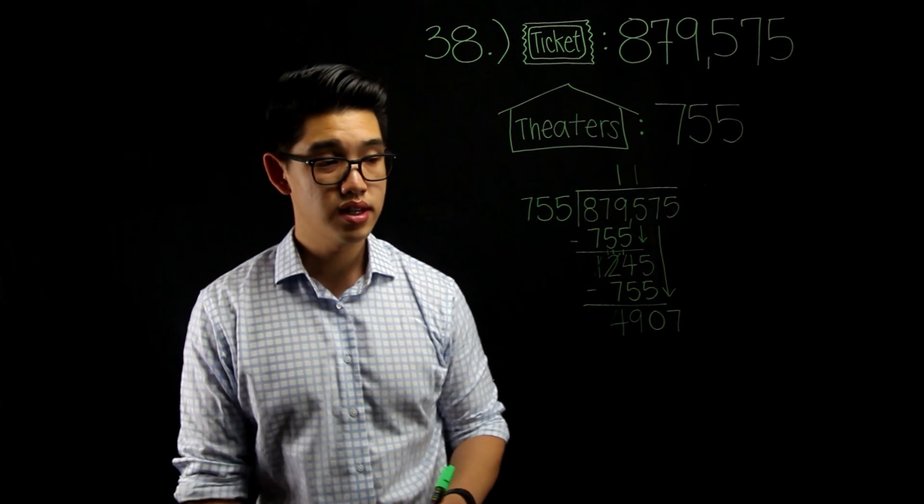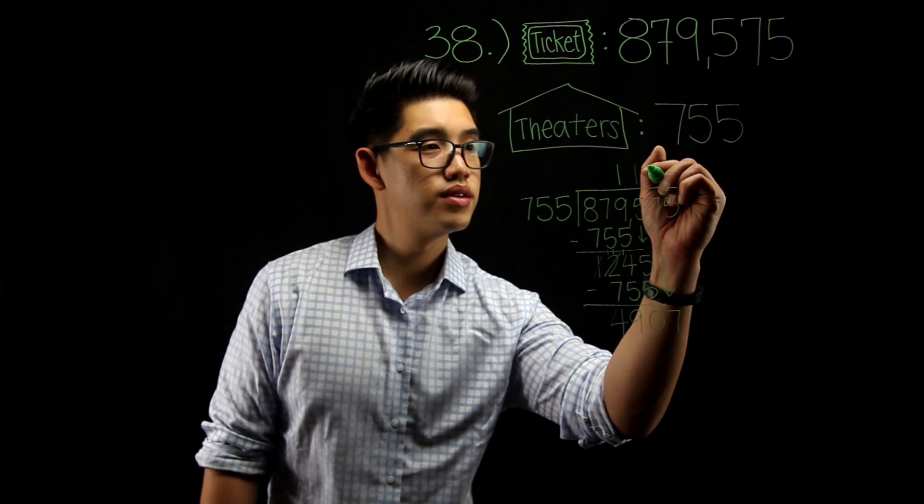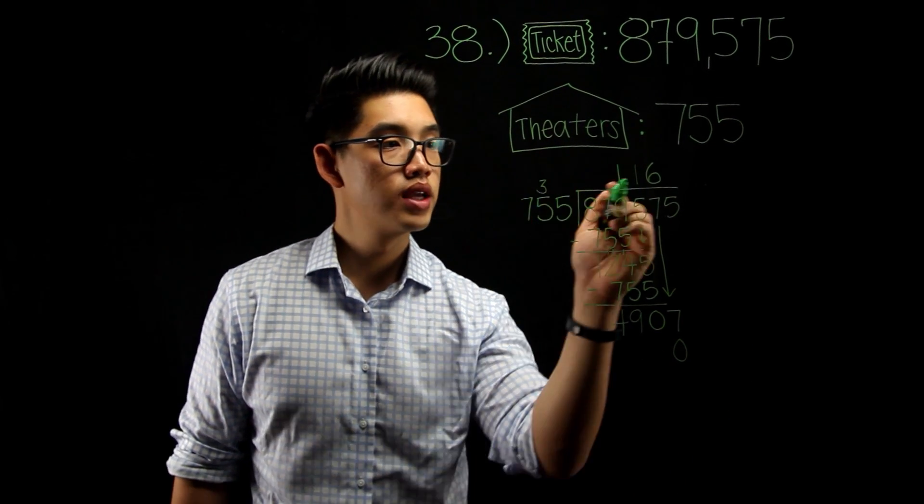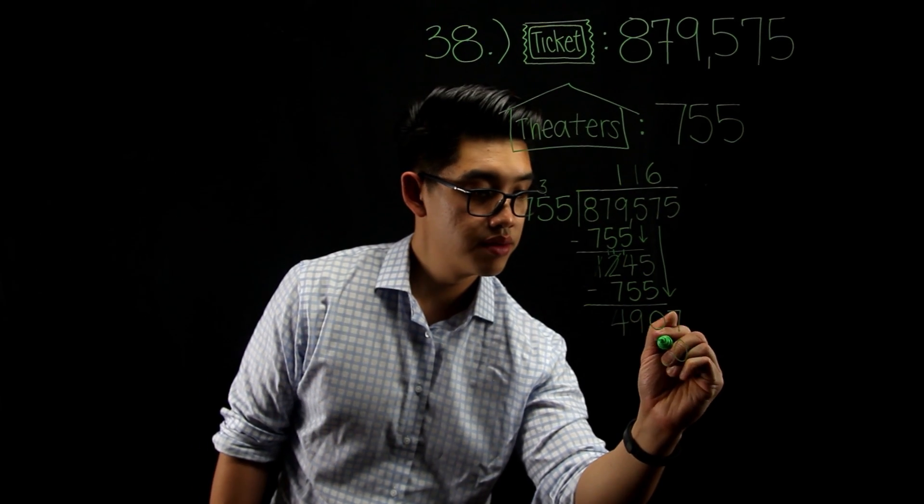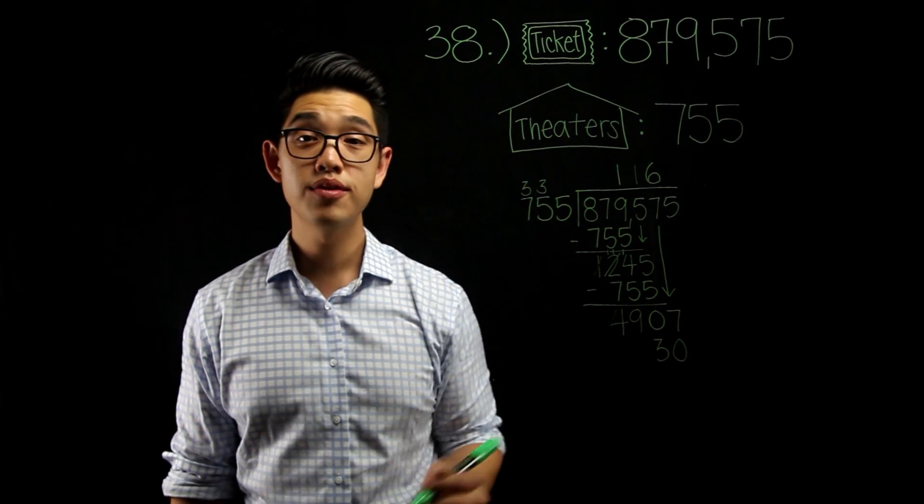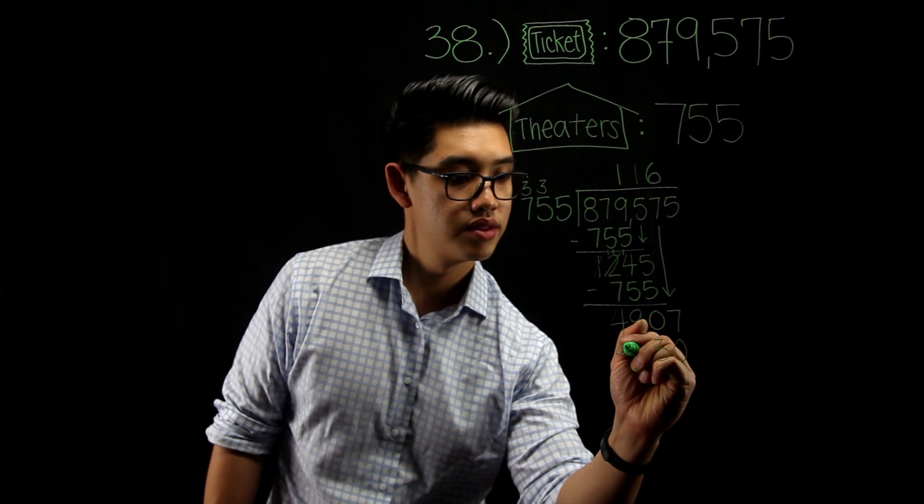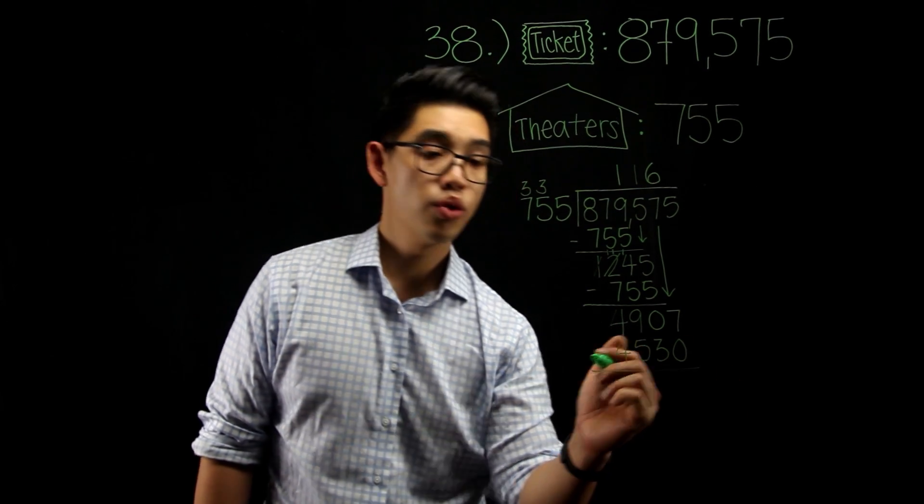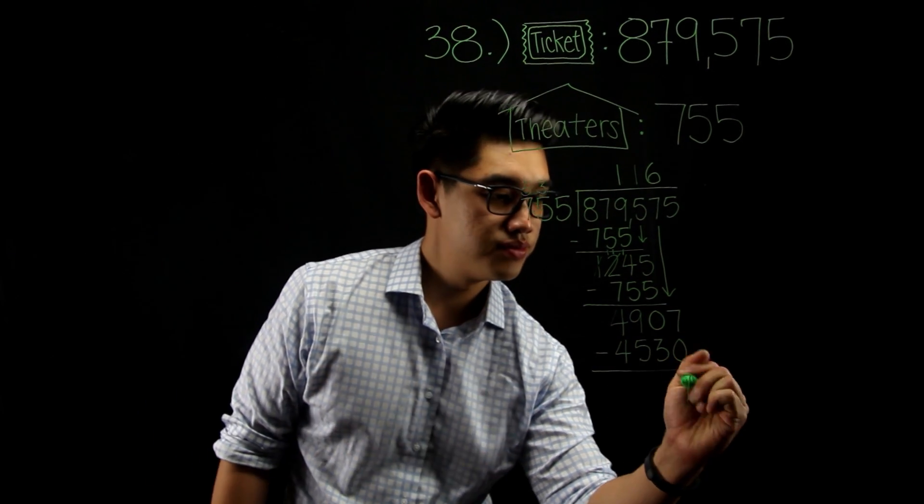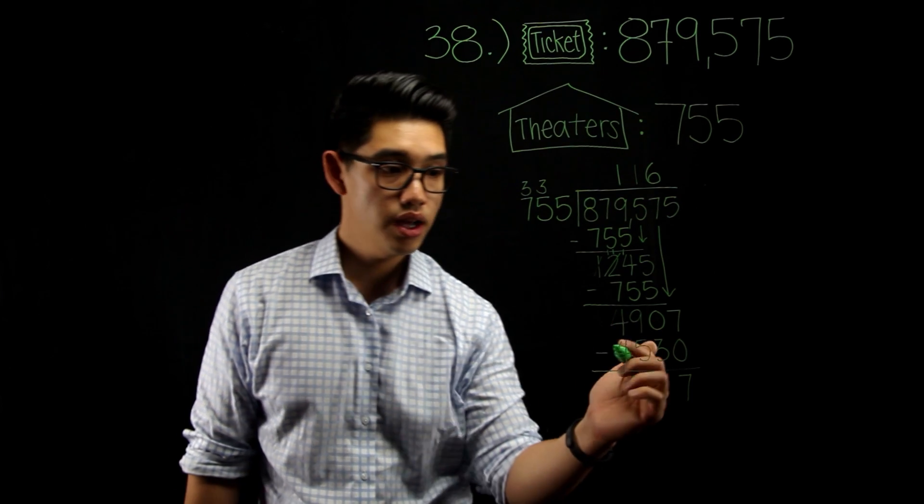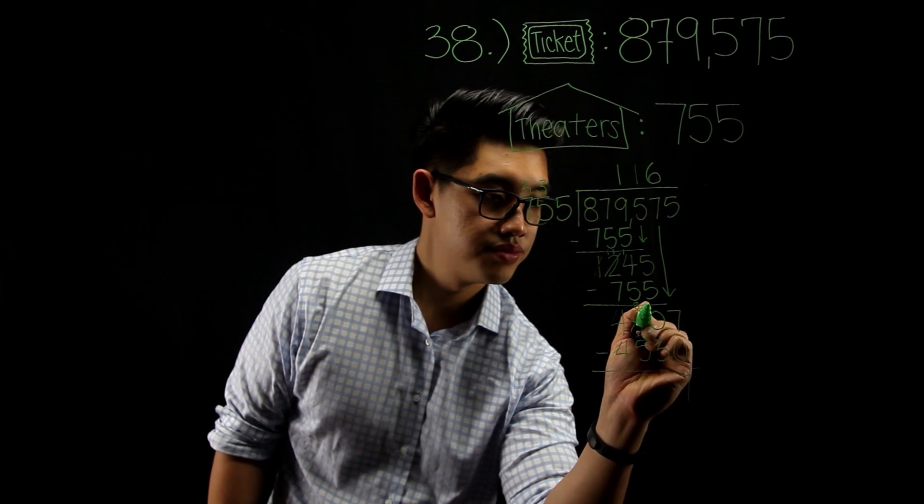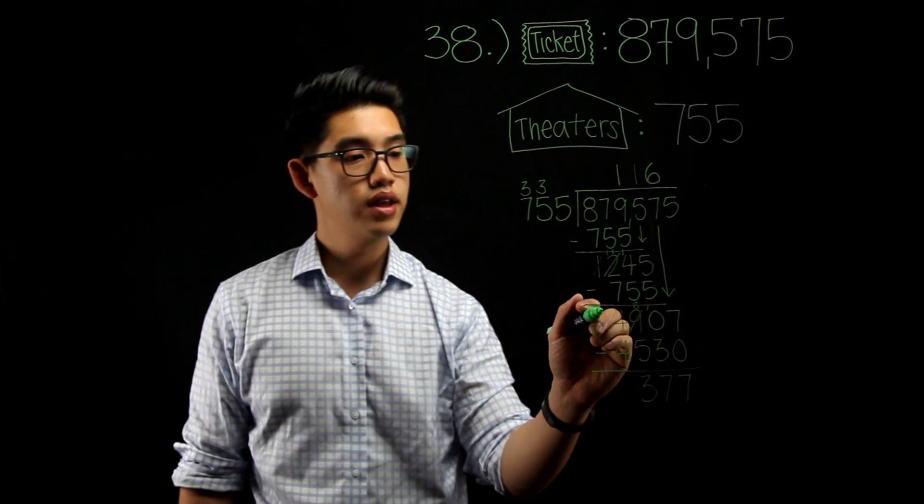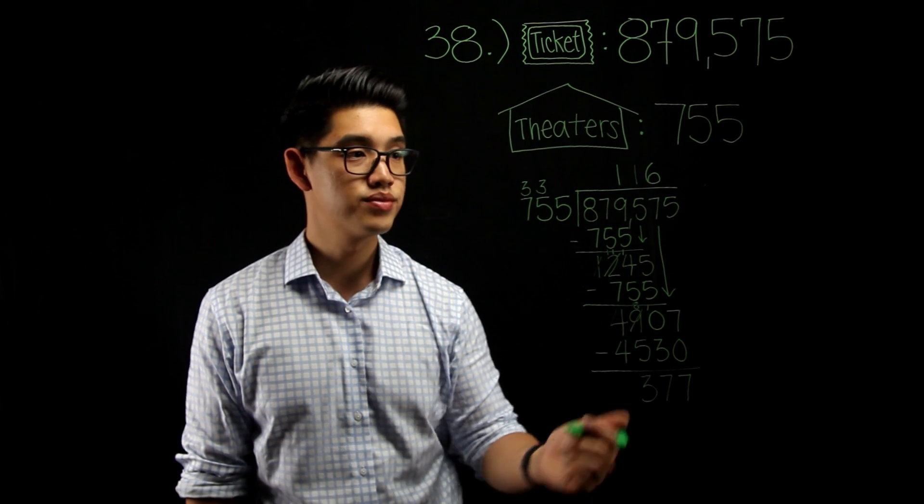755 goes into 4,907 six times. 6 times 5 is 30. 6 times 5 is 30, plus another 3 is 33. 6 times 7 is 42, plus another 3 is 45. We're going to subtract again. 7 minus 0 is 7. 0 minus 3, you can't do that. You're going to borrow again, making that into an 8. 10 minus 3 is 7. 8 minus 5 is 3. And then, 4 minus 4, that's just 0. We're going to drop down to 5.